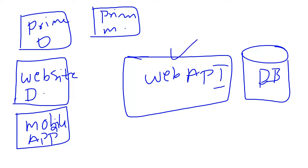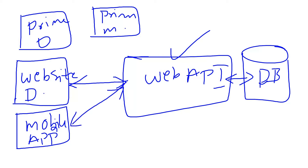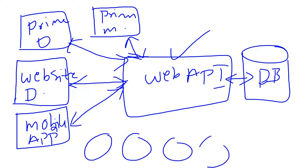If I want to present the data, I need to read the data from the database, apply business rules on top of that, and then present that data. Web API is already doing that job for us. We just need to simply call the Web API and get the data. Similarly, from the mobile UI also, you need to call the Web API — it will get the data from the database, apply business rules, and give you the data. Same for the prime desktop and Amazon Prime mobile application as well. Like this, if you want to build any number of UIs, you can build them — you just need to consume the Web API for the data to be presented.